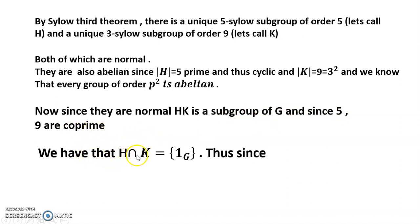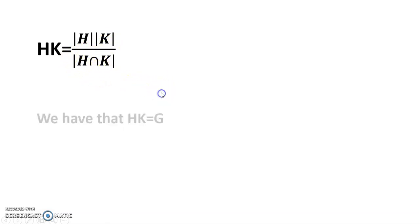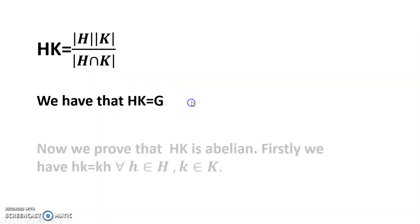We have H ∩ K = {1_G}. Thus, since |HK| = |H| × |K| / |H ∩ K|, we have that HK = G.